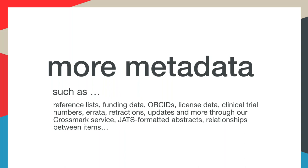When you register content with us, you're creating a complete metadata record for your book chapter, journal article, or data set — we go beyond the basics. We also collect non-bibliographic metadata about the items being registered: things like reference lists, information on who funded the paper, ORCID IDs, license data, clinical trial information, information about errata, corrections, retractions through Crossmark, abstracts, information about relationships between items, and we're always adding more.